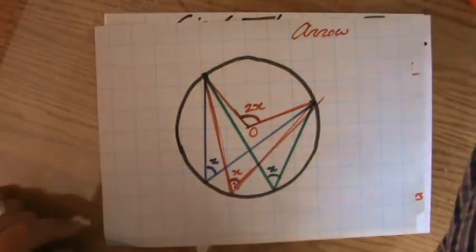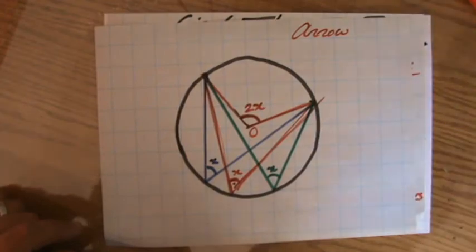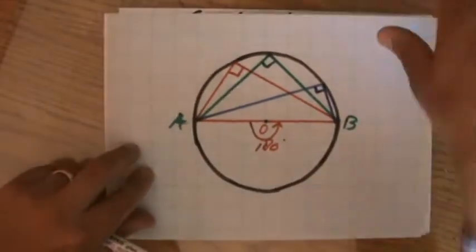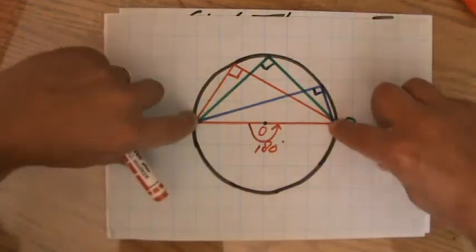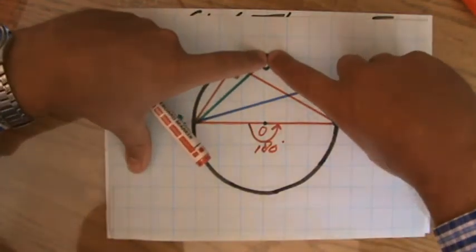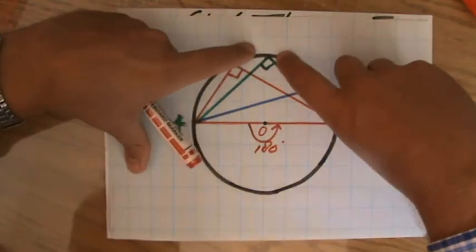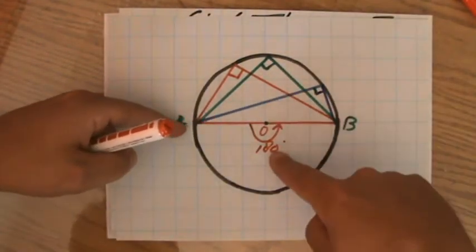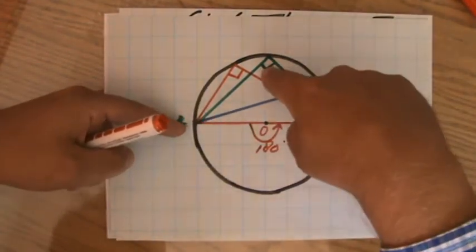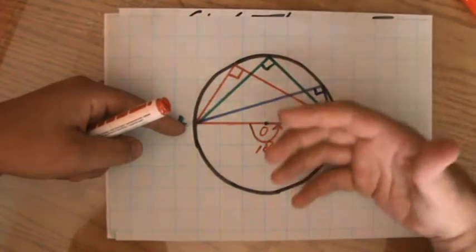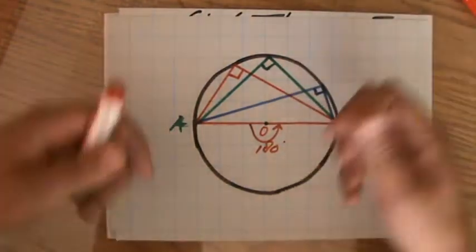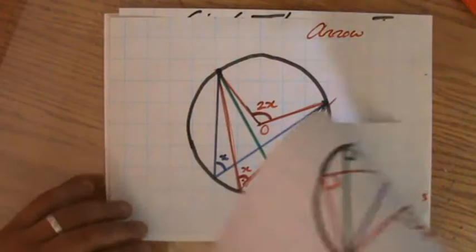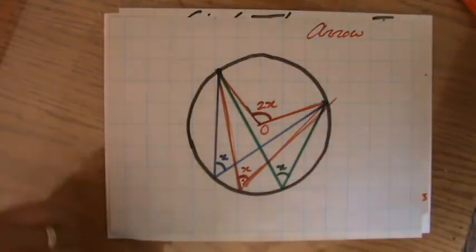We have spoken about angles in a semicircle, which is actually the same theorem. You have two radii, they meet somewhere else, and you always have this right angle triangle, because this angle is half the angle at the middle — diameter, straight line, 180 degrees, so 90 degrees — and you're going to do some Pythagoras and some trigonometry, because you have a right angle triangle.